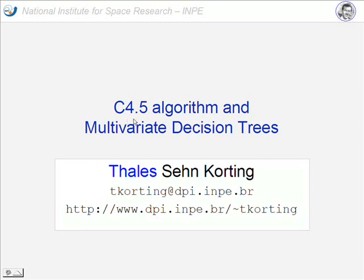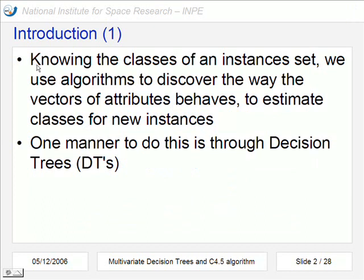We talk about C4.5 algorithm and multivariate decision trees. My name is Thales Senkorting. Here is me, my email and my home site. When we know the classes of an instance set, we can use a computer or an algorithm to discover the way that these attributes behave, to estimate classes for new instances that can be similar to this one that we already have.